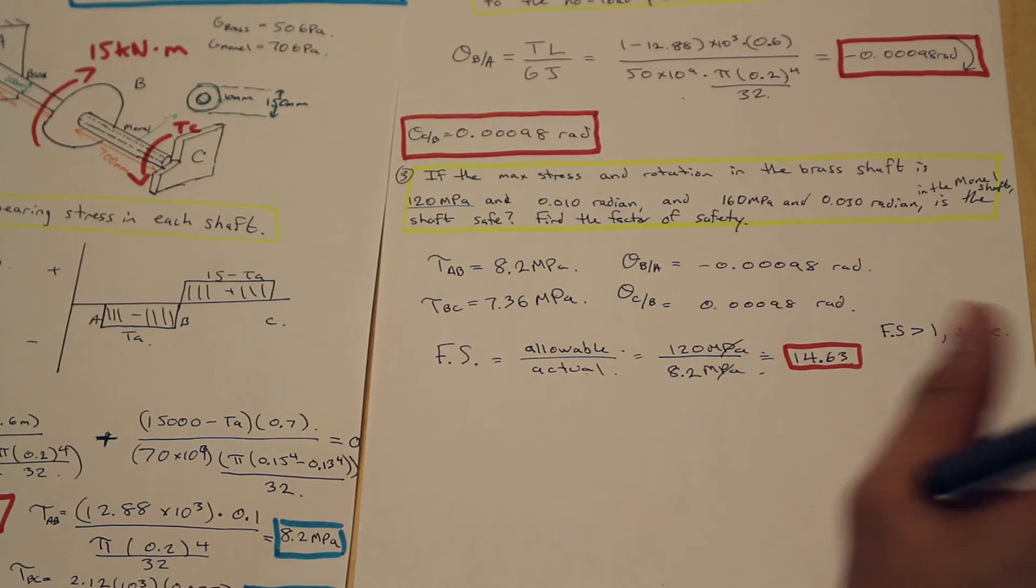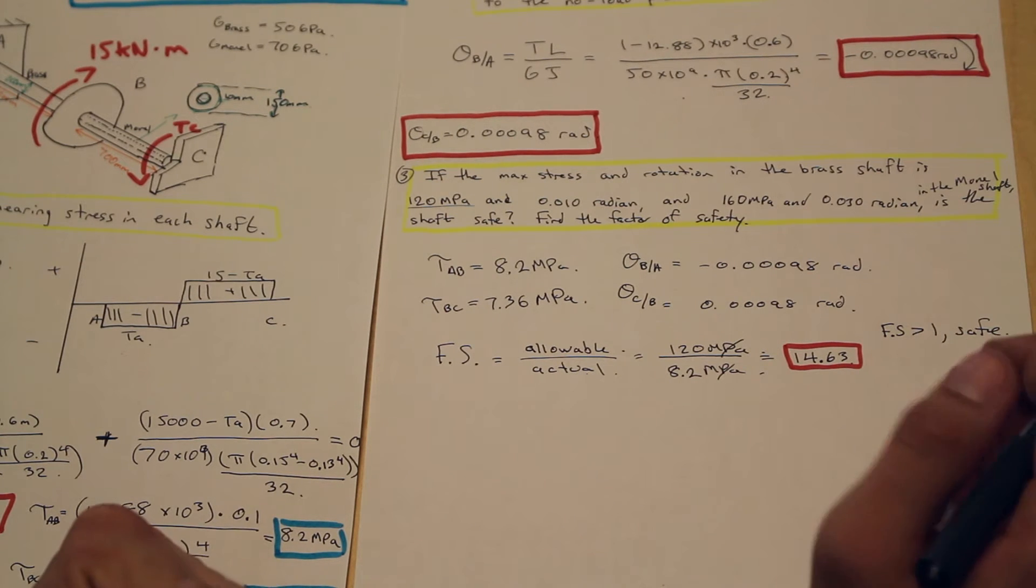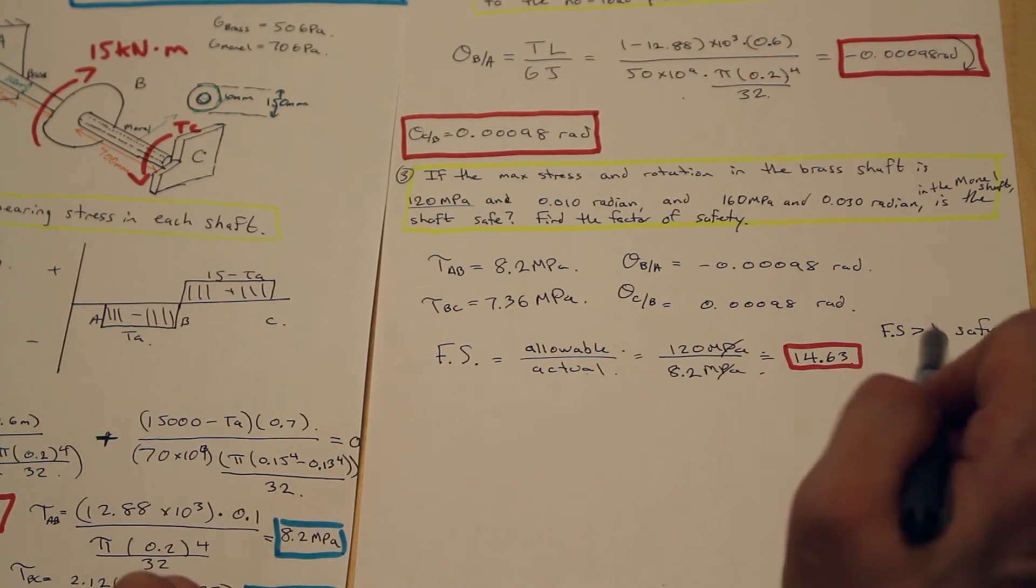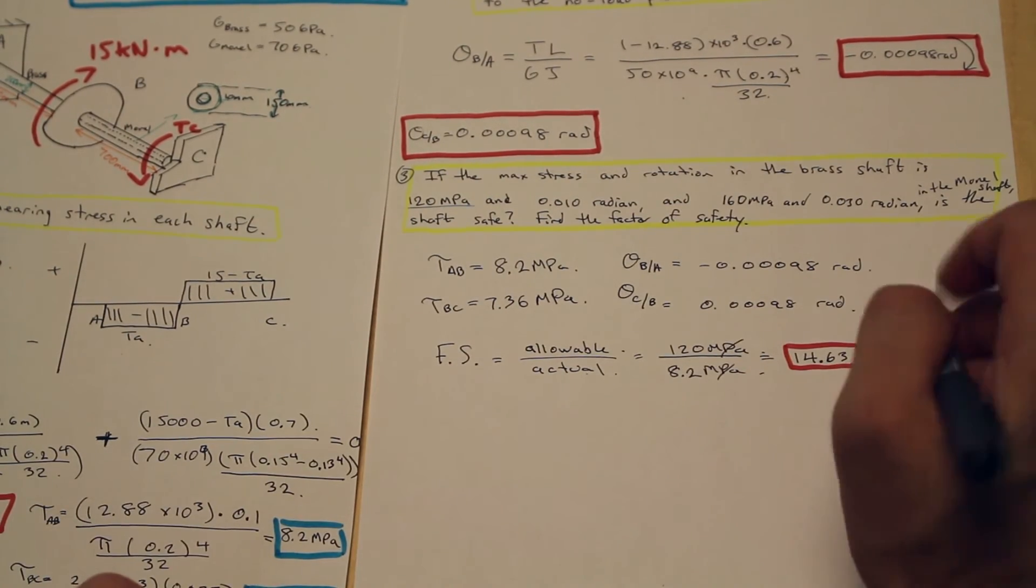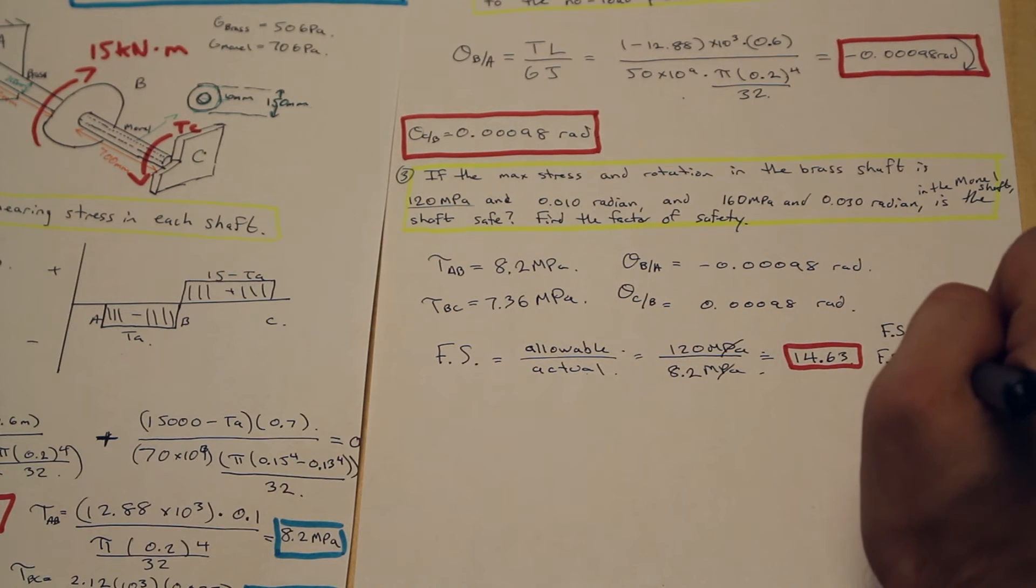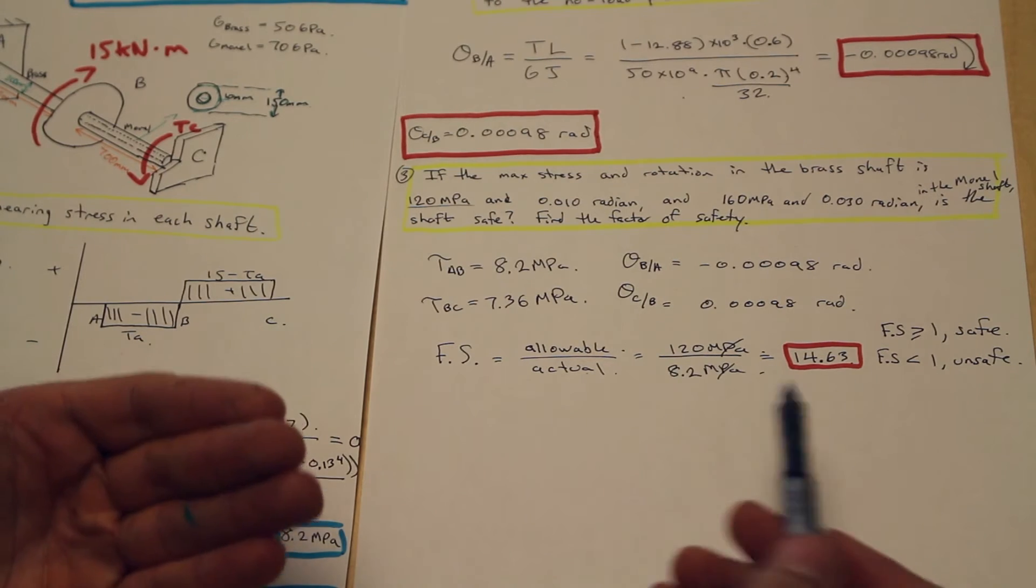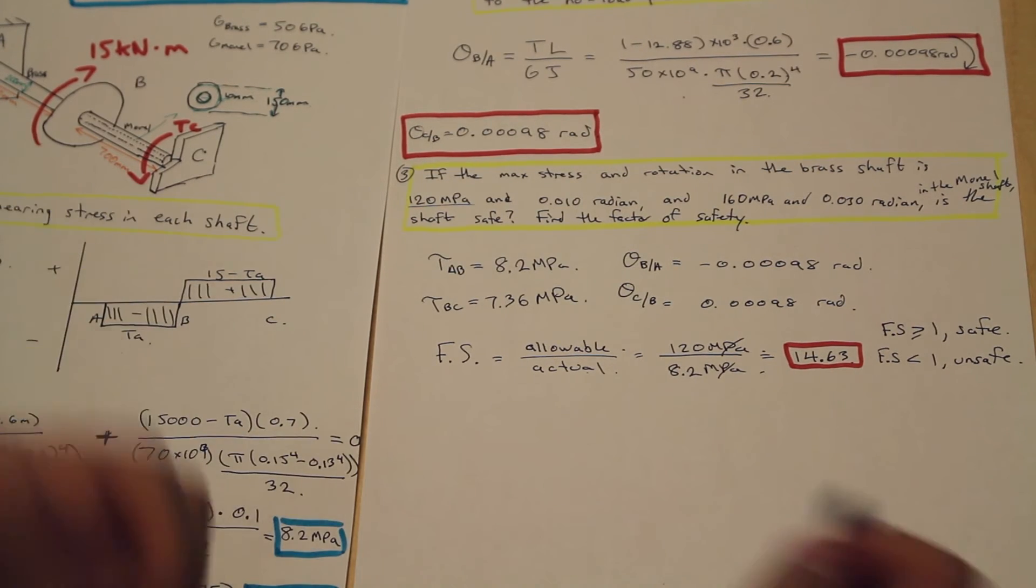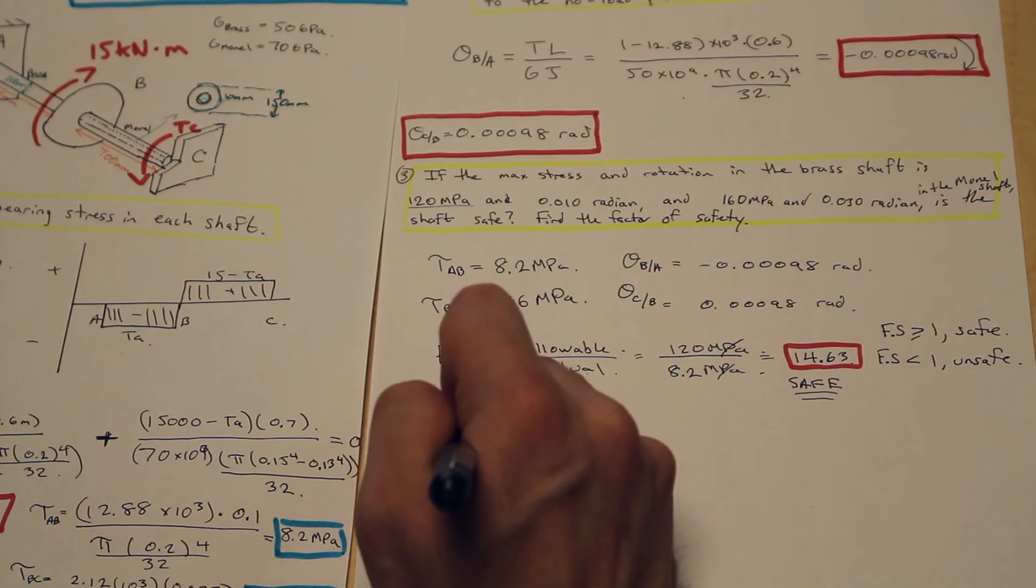If the load, maximum load, is even exceeded a little bit, it's going to break. So a higher factor of safety is better in terms of safety. A factor of safety equal to one, or a factor of safety less than one, is unsafe. Essentially that means the actual is larger than the allowable, so we're getting a decimal, and that's not okay. So this is greater than one. It's safe. Moving on.